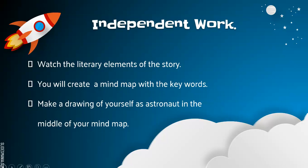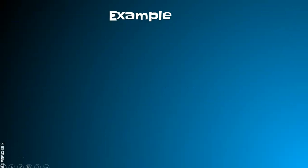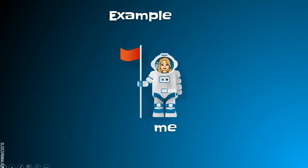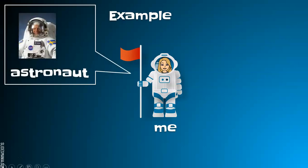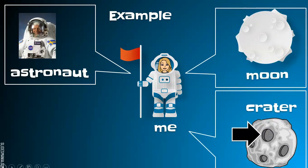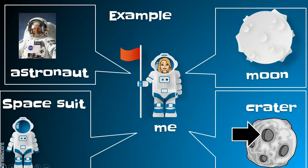For your independent work today, please watch the literary elements of the story. Then you will create a mind map with the keywords. Make a drawing of yourself as an astronaut in the middle of your mind map. Here you have an example. Place the drawing in the middle, then the words: astronaut, moon, crater, and spacesuit.